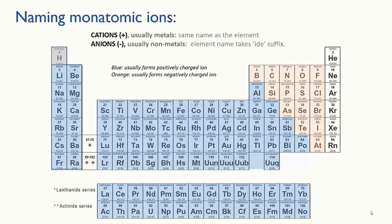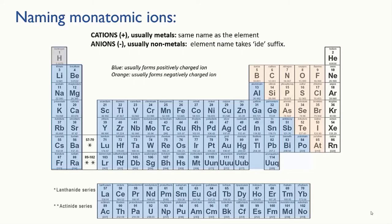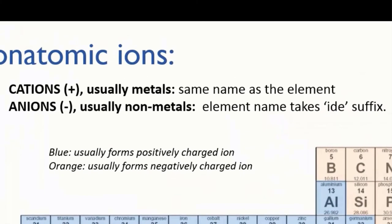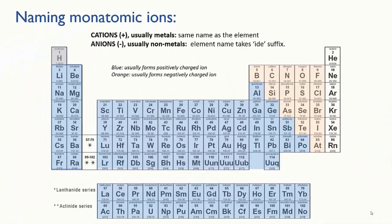For our purposes here, what you need to know is this. If a monatomic ion is positively charged, then its name is the same as the neutral atom. This usually happens with metal atoms. So when a sodium atom becomes an ion, we simply call it a sodium ion. And you can have tin ions and uranium ions and iron ions. Hydrogen can also form positive ions, as we've said, and they would just be called hydrogen ions.